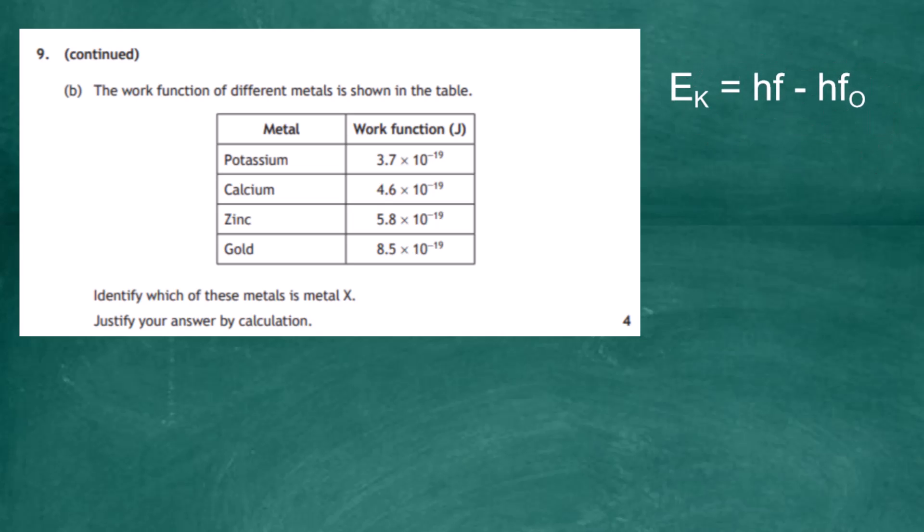Just to recap, the kinetic energy of the photoelectron emitted is equal to hf minus hf₀, and hf₀ is the work function. We've already established that the threshold frequency from the graph is 7 × 10¹⁴ Hz, so all we have to do now is plug in the values into the equation. The work function is equal to hf₀.